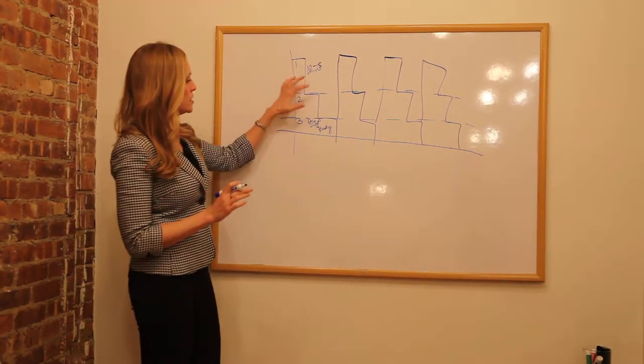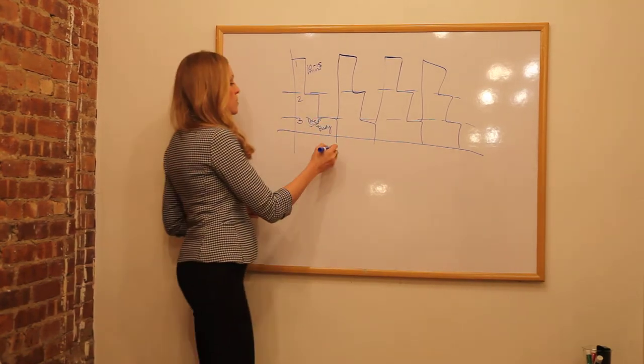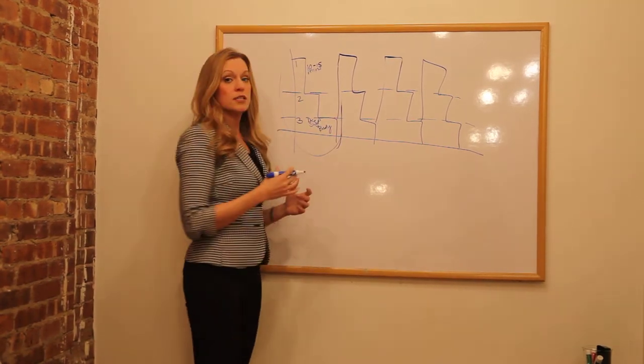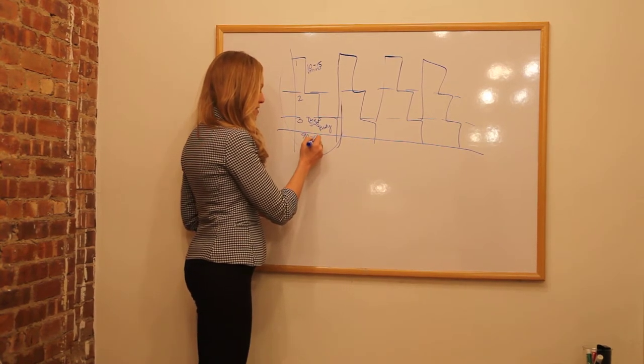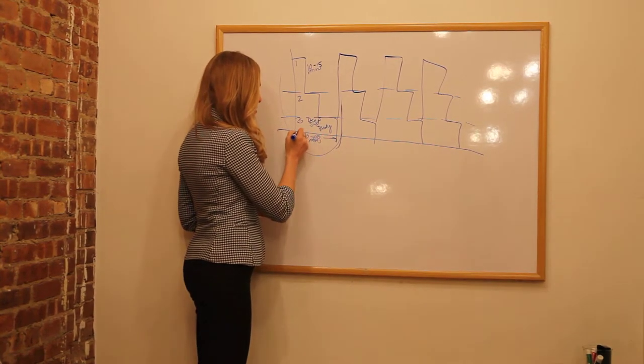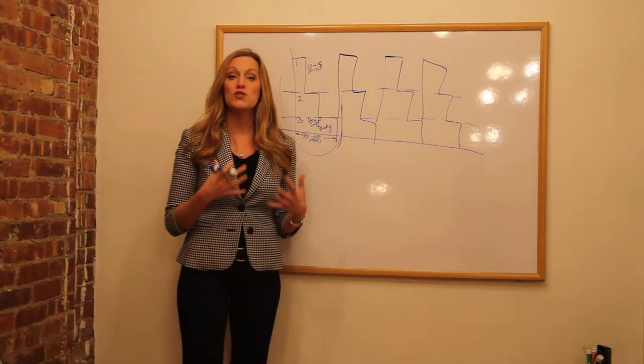For this whole stage one, stage two, stage three, this is all going to be one cycle through our sleep. This is, for most people, going to last about 90 to 110 minutes. For this whole cycle, it's going to last about an hour and a half to almost two hours.